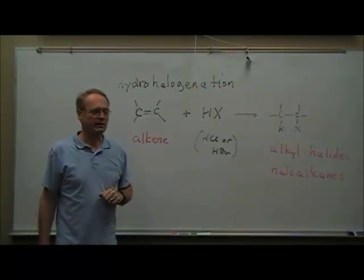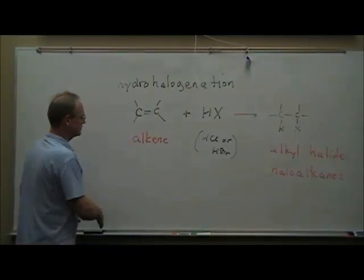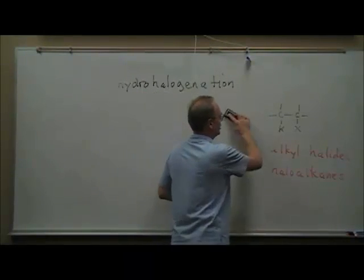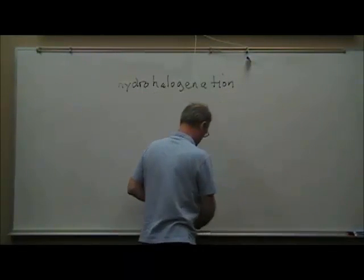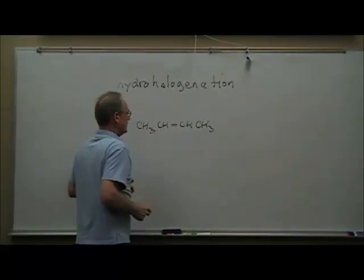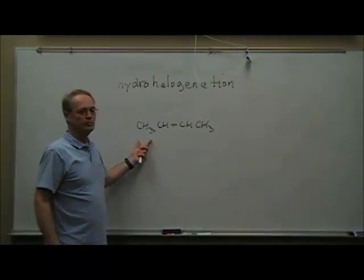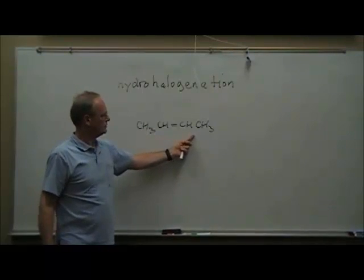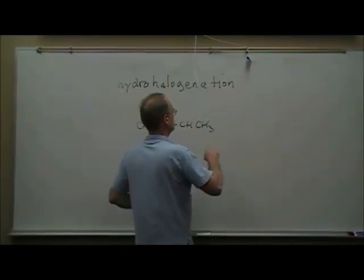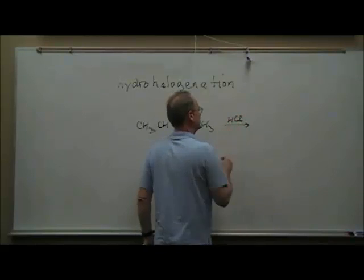Let's do a quick couple of examples and then we'll see where it can get a little more complicated. I'm going to put a structure on the board and ask you to draw the product you'd expect if we were to do this in the laboratory. Here is a simple alkene — you would call that 2-butene, because it's four carbons with the double bond at the second carbon. If we add HCl to that molecule...